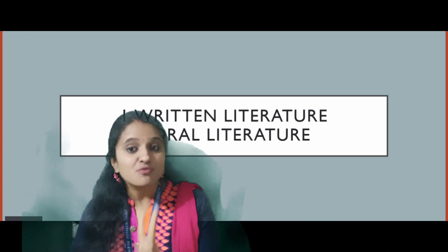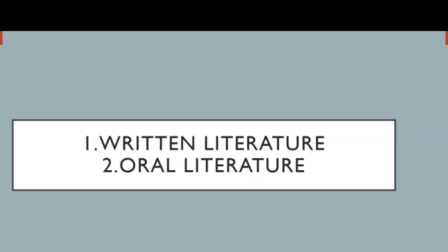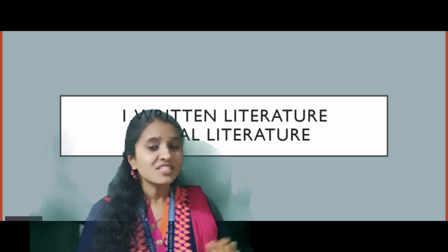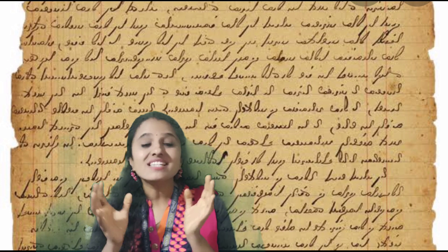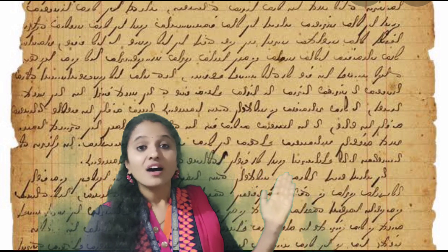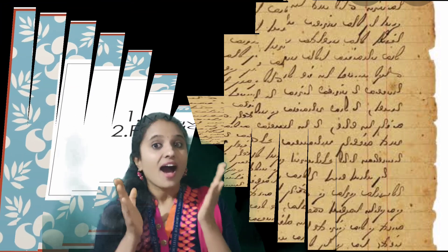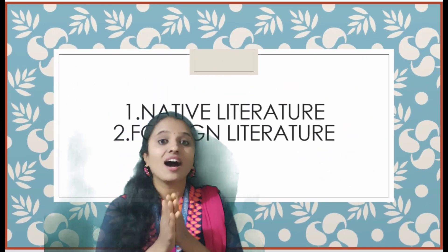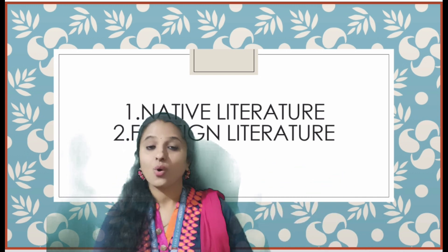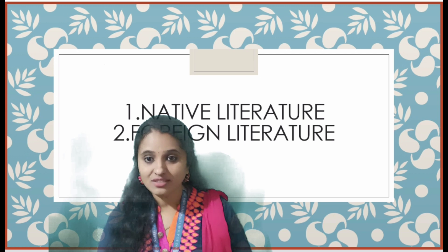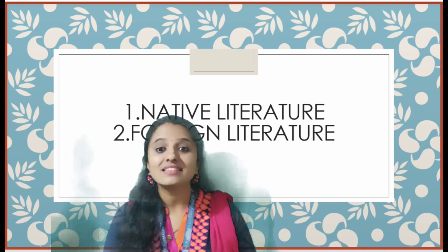Written literature is one type, and oral literature is the second type. Written literature is the main source of literary sources — literature which is in written form. Again, this written literature is divided into two types: one is native literature, and the second one is foreign literature.